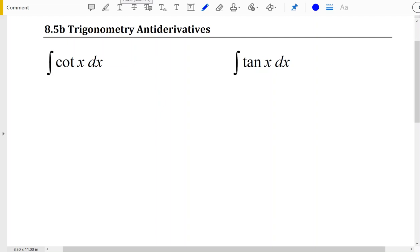The next step for trig antiderivatives is figuring out rules for cotangent and tangent. For these, we can't rely upon our rules for derivatives because there wasn't a derivative that gave us an answer of tangent of x or cotangent of x, so we can't just go backwards from previous rules.